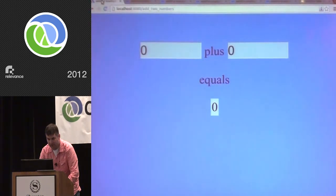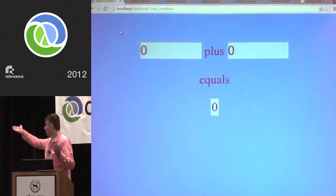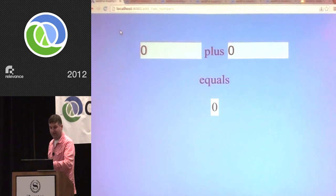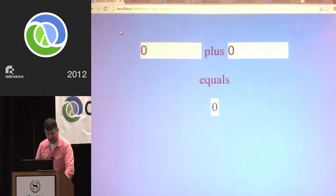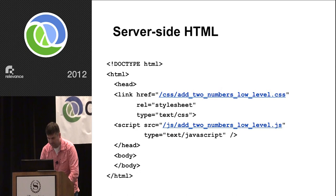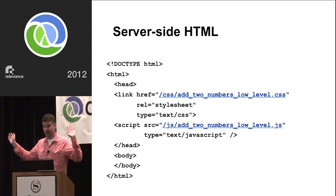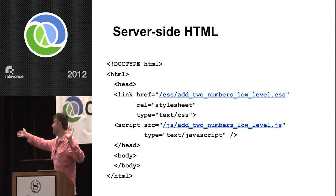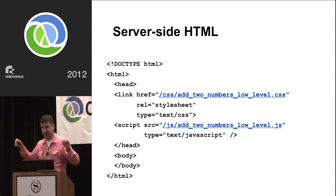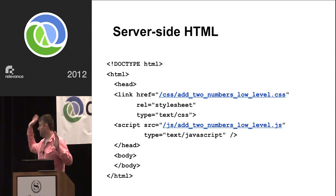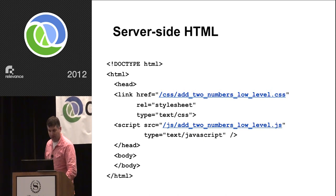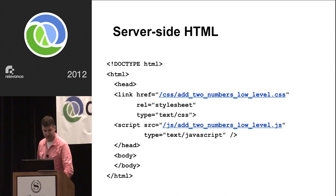Here's the simplest application possible. It has two text fields, adds them together, and shows the result. Here's the server-side HTML — this is the only time I'll show anything server-side. You can see this is braindead HTML: all it does is load a stylesheet, load a JavaScript file (which is, of course, ClojureScript), and everything else happens in the JavaScript. All examples have exactly the same structure of HTML.